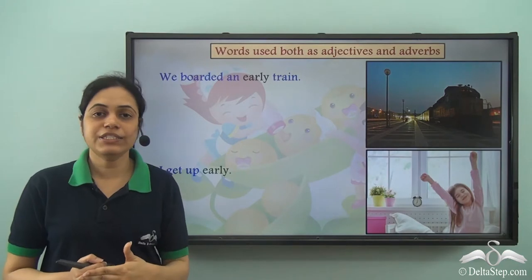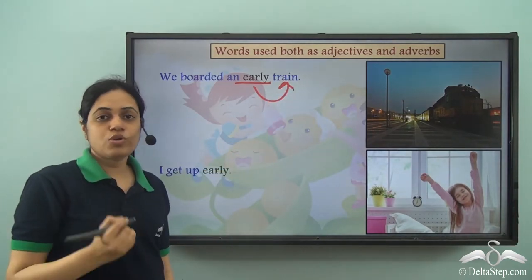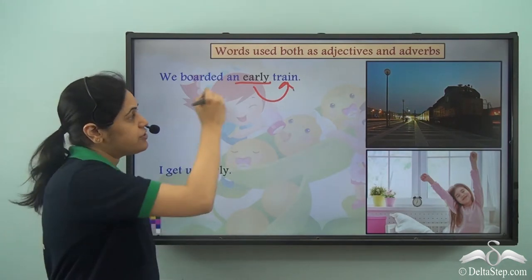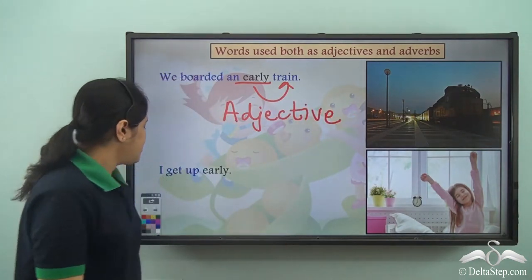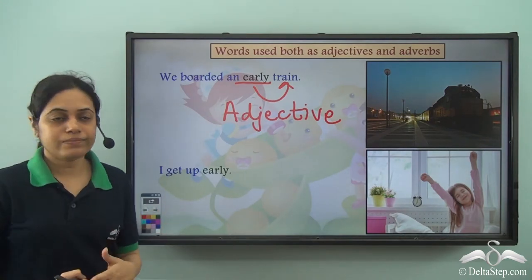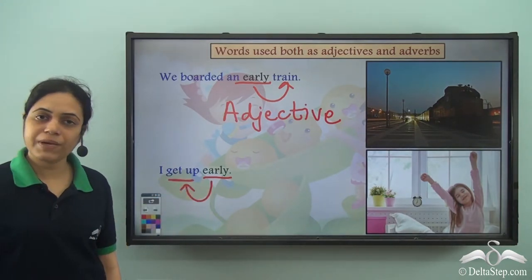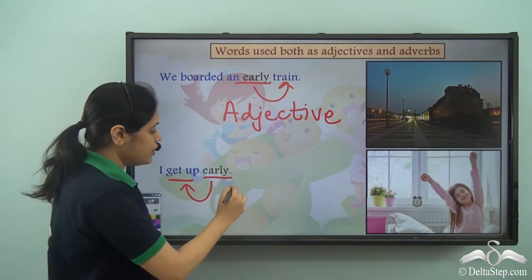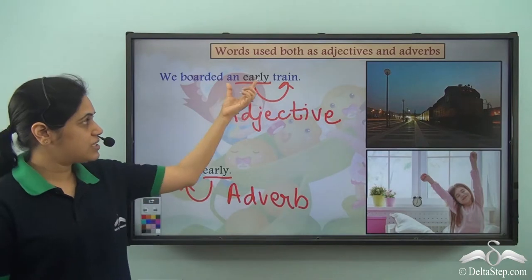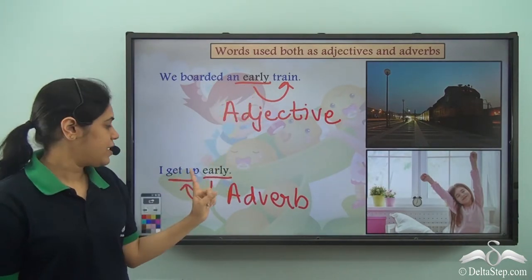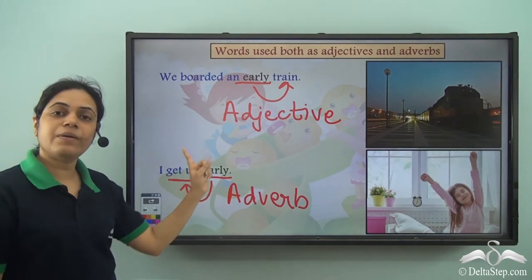Similarly, in 'We boarded an early train,' early is describing the noun train — so early is an adjective. But in 'I get up early,' early is describing the verb get up — when do I get up? Early. So here early is an adverb. The same word early is being used as both an adjective and an adverb. Once again, the adjective comes before the noun whereas the adverb comes after the verb.